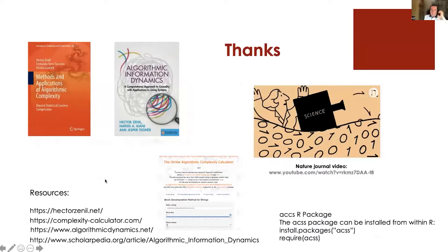Some resources: my own webpage, a complexity calculator for strings and graphs, our lab link with source code in many computer languages including an R package called ACSS that implements all our functions. There is a Scholarpedia article on this topic, Nature produced a video explaining our causal deconvolution, a new book is coming from Cambridge University Press called Algorithmic Information Dynamics, and Springer published a book last year explaining CTM and BDM. Thank you very much.